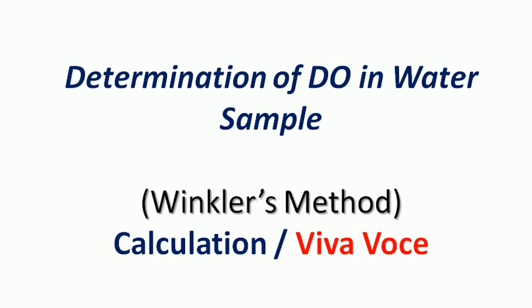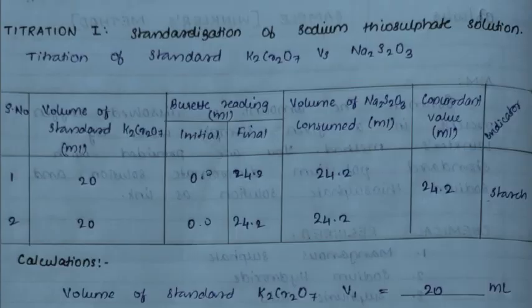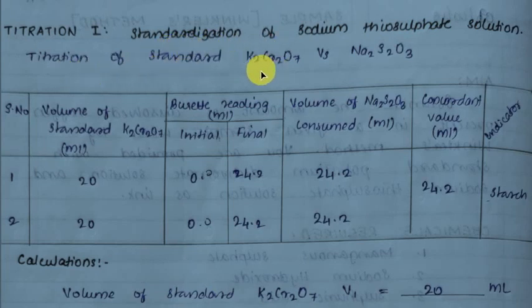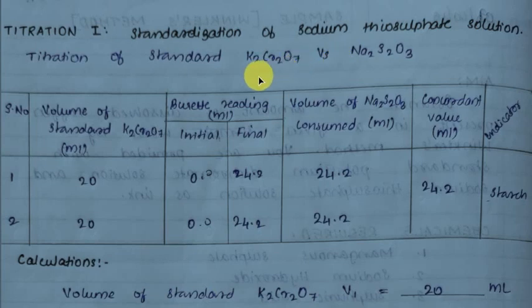The calculation part comes first, then viva questions. Titration 1 is the standardization of sodium thiosulfate. We have a burette solution of sodium thiosulfate. Standard potassium dichromate (K2Cr2O7) is used as the standard. We also have potassium iodide, sulfuric acid, and a starch indicator for the titration.